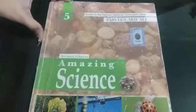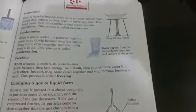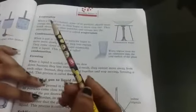Class 5 Amazing Science book, continuing our unit number six on water. Today we're going to study about a few terminologies of matter: evaporation, condensation, sublimation, and freezing. What is evaporation? Evaporation is when liquid boils. You can see when we boil water...